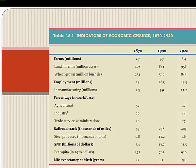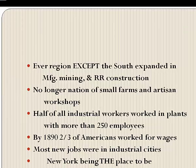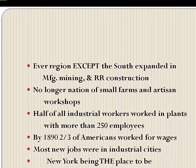This chart shows how much we had grown from 1870 to 1920 — almost everything increased except farming, which decreased. Every region except the South saw rapid expansion of manufacturing and mining. By 1913, the United States produced a third of the world's entire industrial output, and half of all industrial workers labored in plants with more than 215 employees.